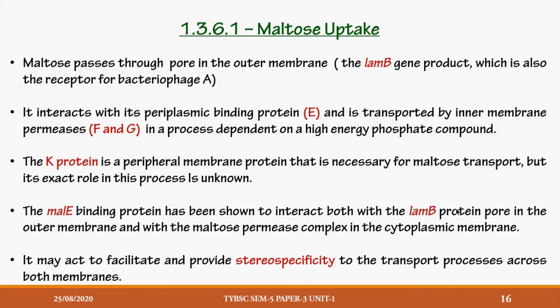The first example we are going to learn about the shock-sensitive transport system is maltose uptake. We have already learned that a solute will come from outside, cross the outer membrane, enter the periplasm, bind to a binding protein, and the binding protein will help its transport inside the cell.